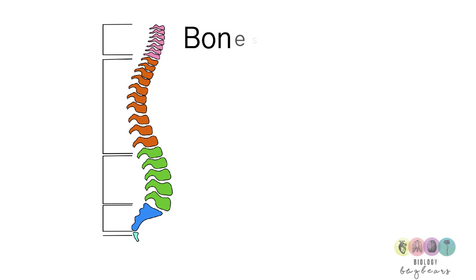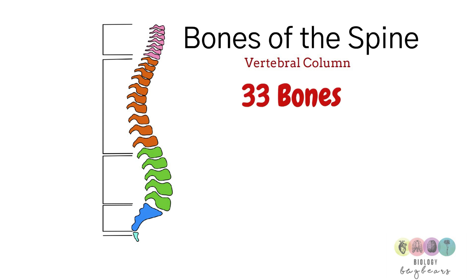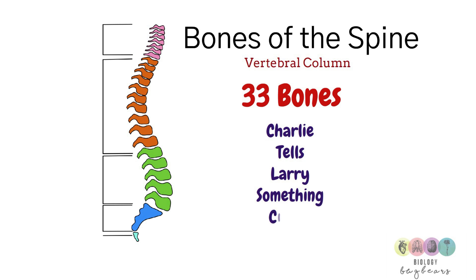Moving on to the spine and the bones of the spine, otherwise referred to as the vertebral column. There are 33 bones called the vertebrae, and we need to know the regions of the spine and how many bones are in each region.